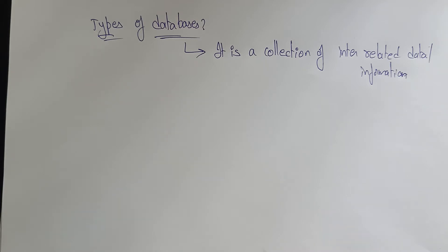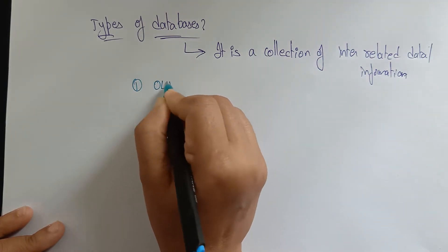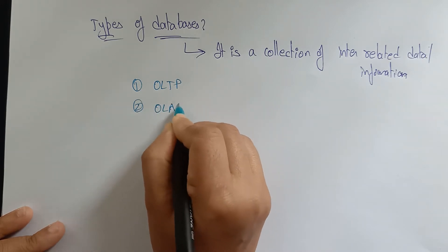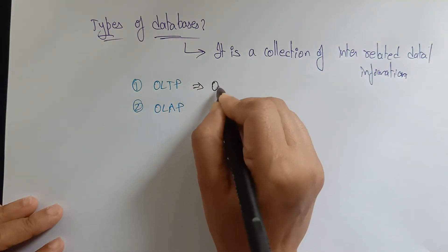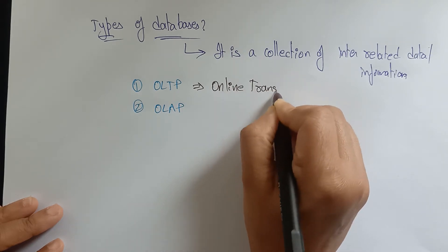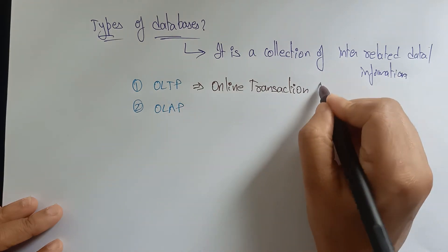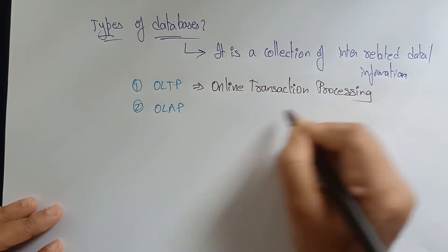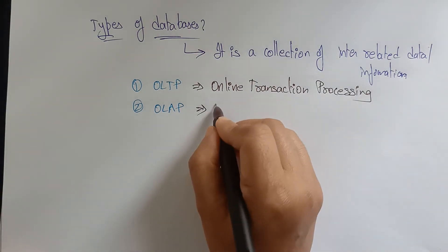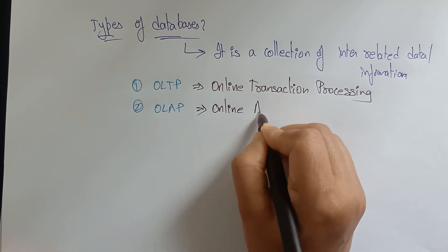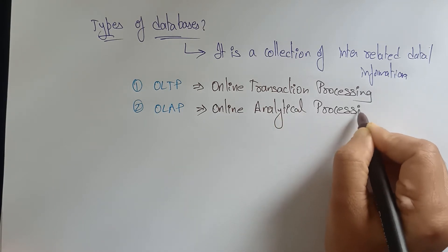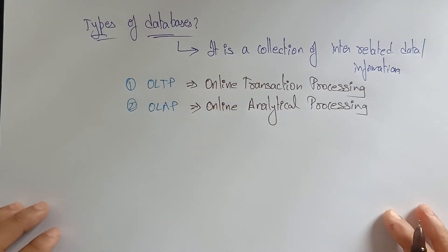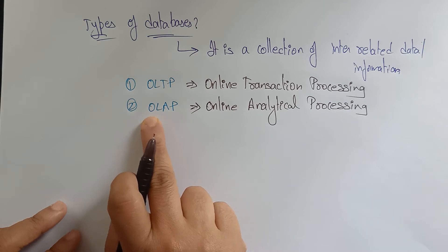There are two types of databases: OLTP and OLAP. OLTP means Online Transaction Processing. OLAP means Online Analytical Processing. These are the abbreviations and the two main types of databases we will discuss.